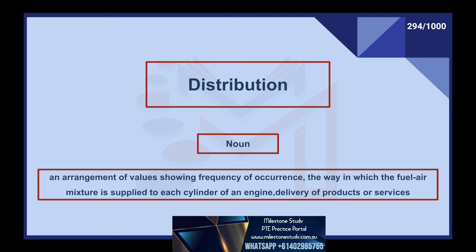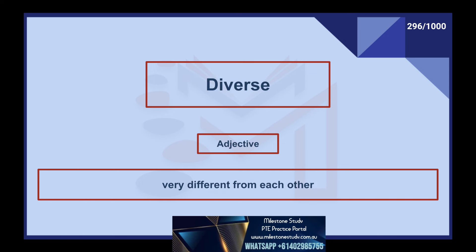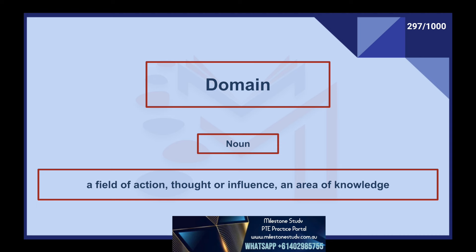Distribution, noun: an arrangement of values showing frequency of occurrence, the way in which the fuel-air mixture is supplied to each cylinder of an engine, delivery of products or services. Disturbance, noun: a noise or something that stops you from continuing what you are doing. Diverse, adjective: very different from each other. Domain, noun: a field of action, thought or influence, an area of knowledge. Dominance, noun: the state of being more powerful, successful or important than others. Dominant, adjective: strongest. Domination, noun: authority, rule, control.